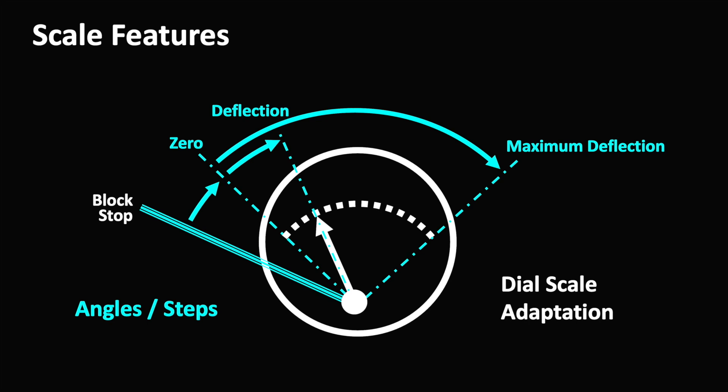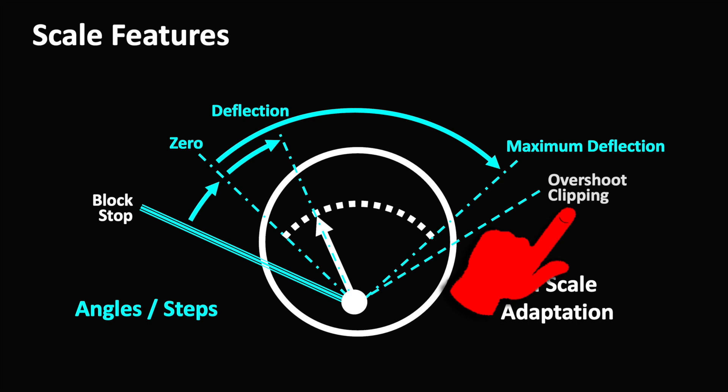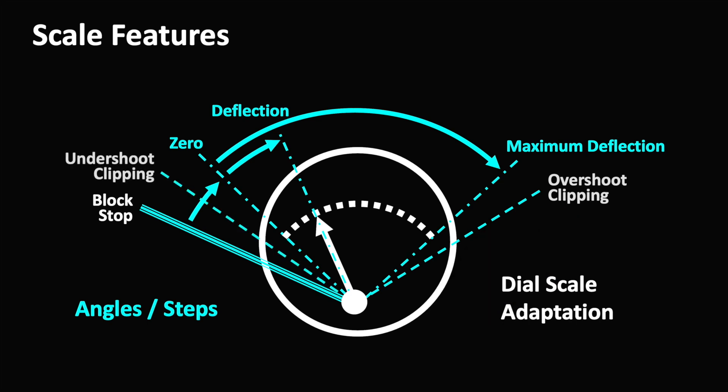Overshoot clipping prevents the pointer from hammering against the casing, losing steps. For the low range under zero, there is a corresponding undershoot clipping.